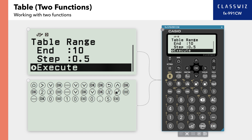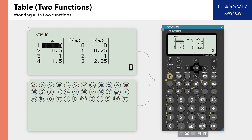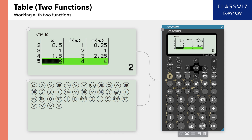Finally, confirm that the cursor is on Execute and press Execute to see the values on the table. As you can see, the table shows the values of FX and GX corresponding to the value of X. We can see that when X equals 0, FX and GX equals 0. When X equals 2, both FX and GX equals 4. From this, we find that the intersection of Y equals 2X and Y equals X squared lies on the coordinates of (0, 0) and (2, 4).